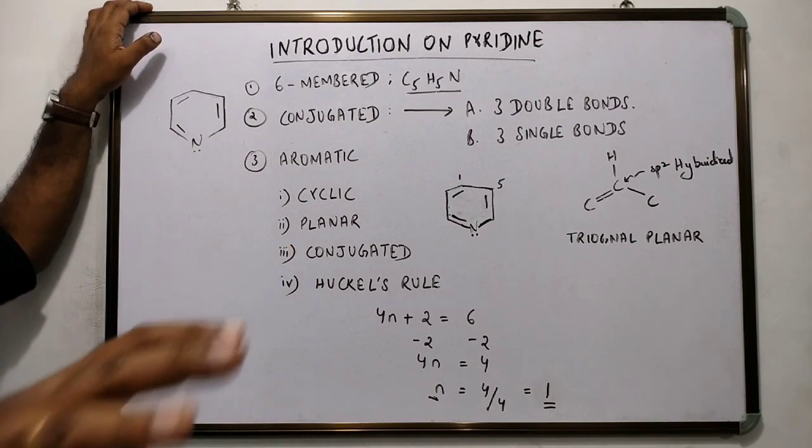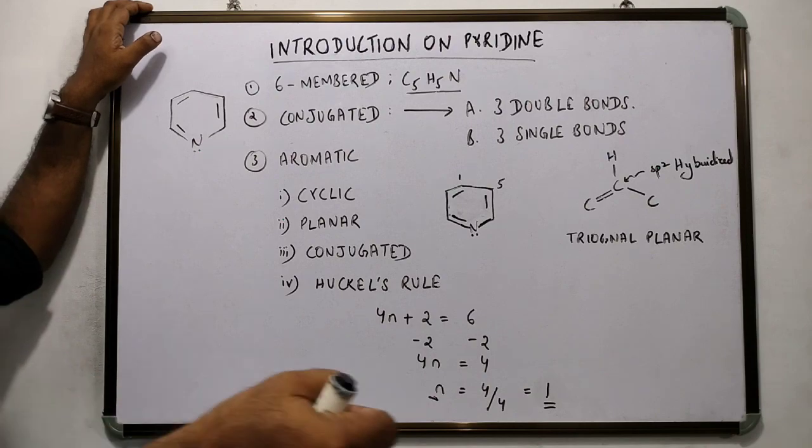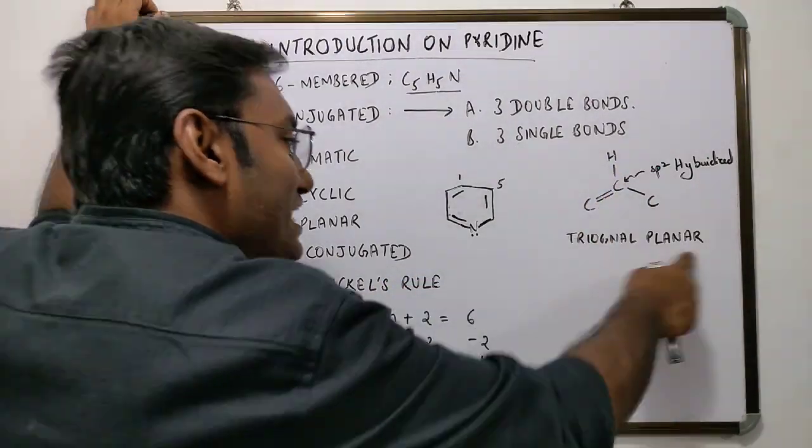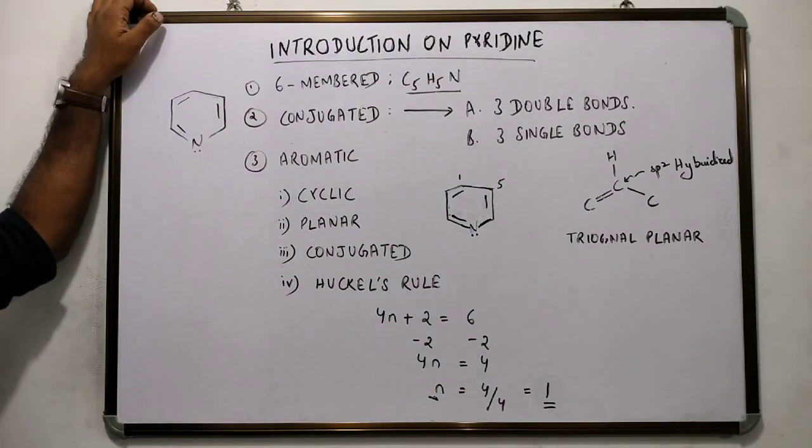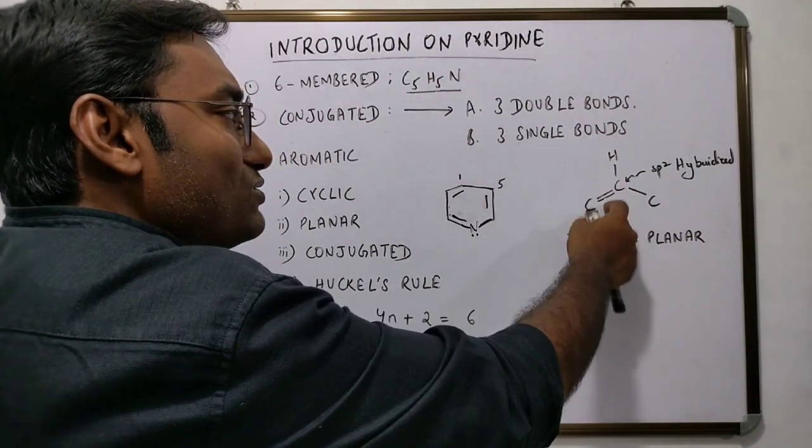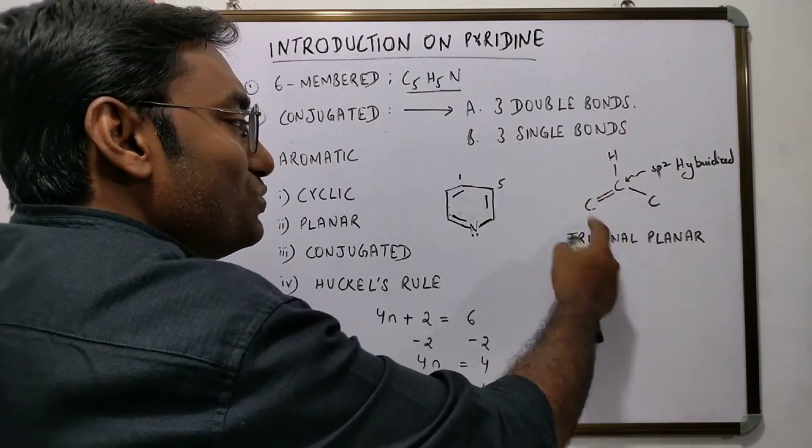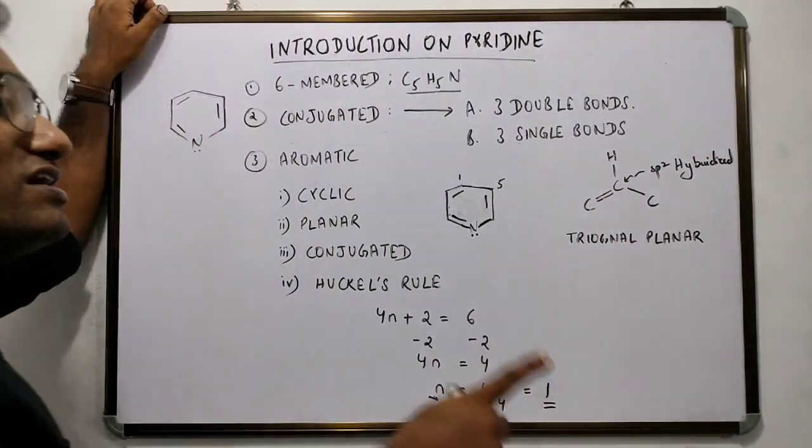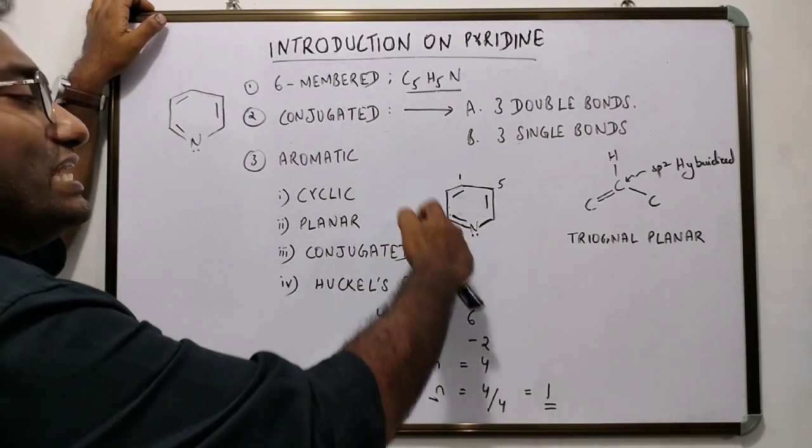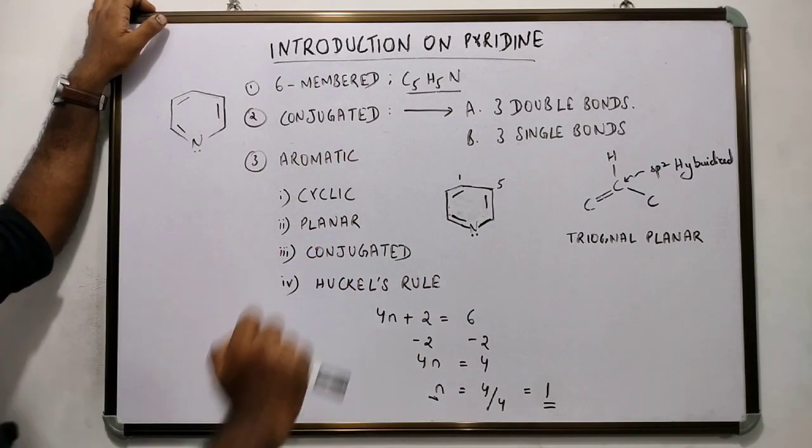Now, each of the five carbon atoms, which is an sp2 hybridized carbon atom, has this trigonal planar geometry. That would only mean that the carbon and the hydrogen that are attached to it are in one single plane. That means the molecule of pyridine is a planar molecule.